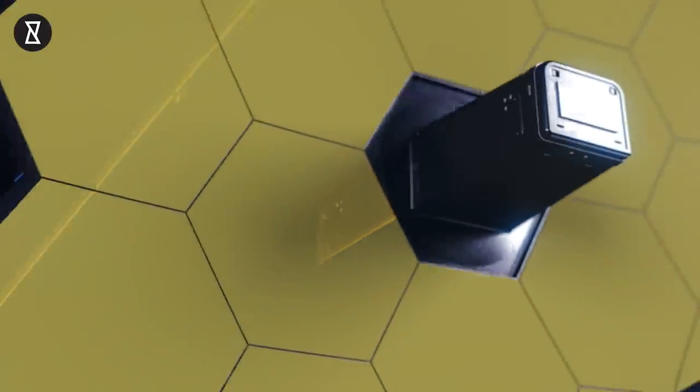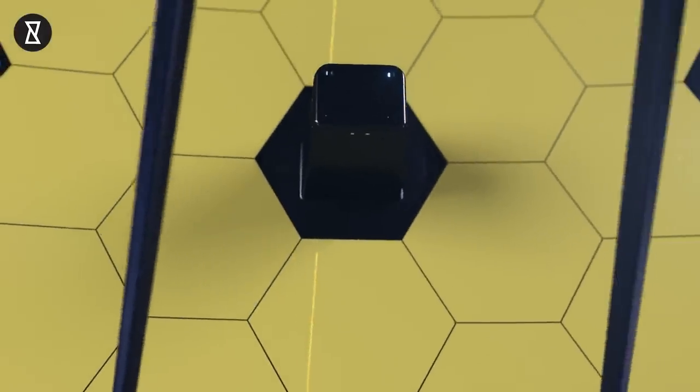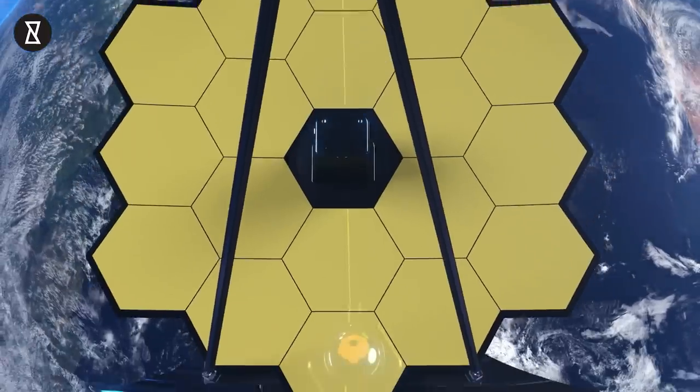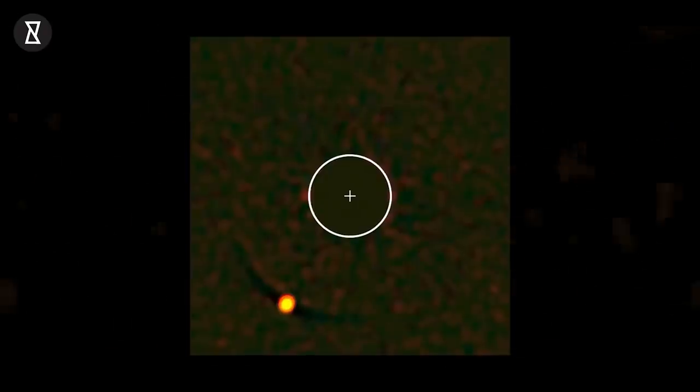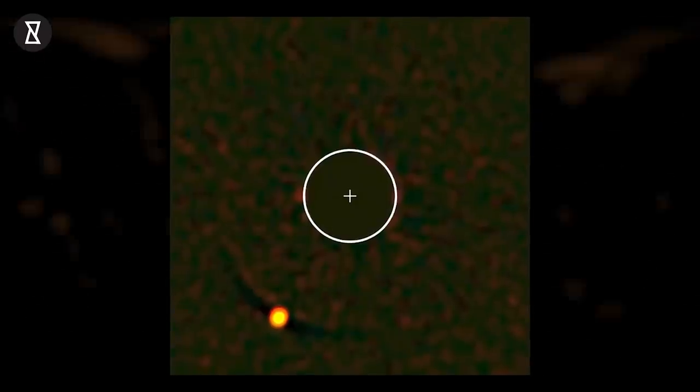To gather JWST's first direct images of an exoplanet, astronomers turned the telescope towards the star HIP 65426, whose massive planetary companion HIP 65426b was discovered using direct imaging back in 2017.